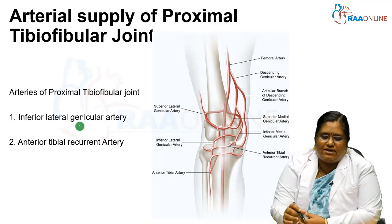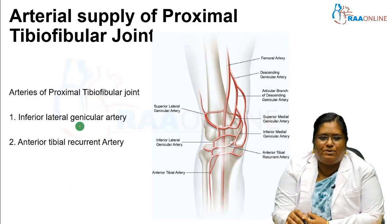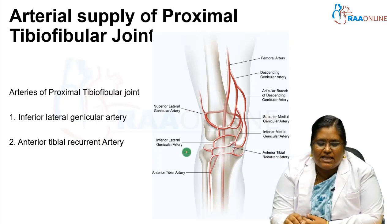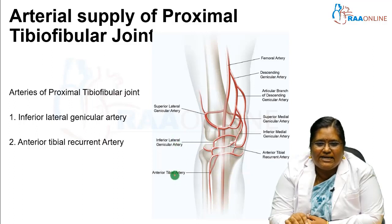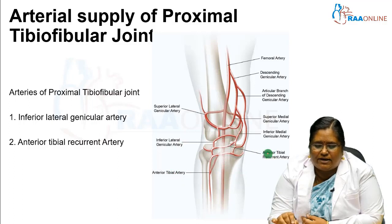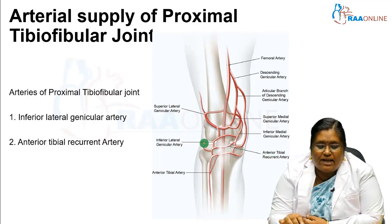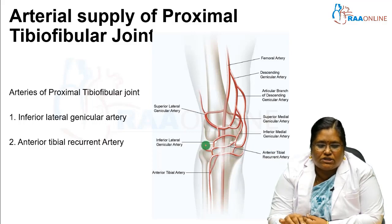The arterial supply of the proximal tibiofibular joint is provided by two arteries: the inferior lateral genicular artery and the anterior tibial recurrent artery. These two arteries supply nourishment to the proximal tibiofibular joint.